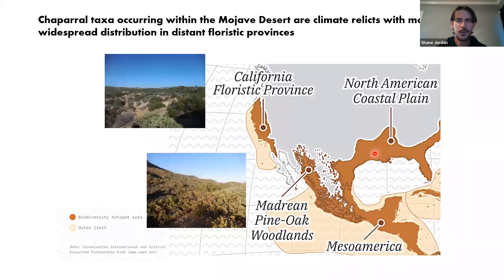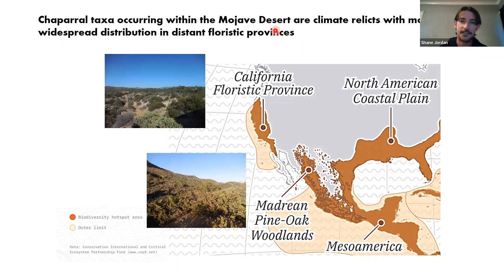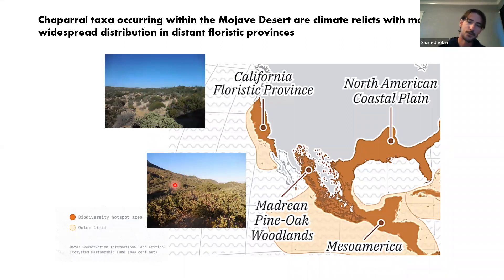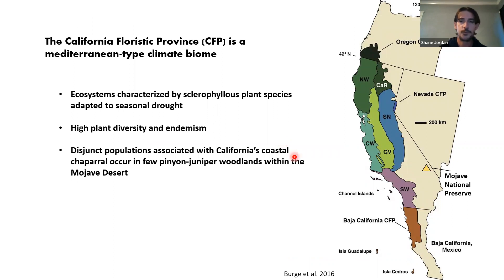The chaparral taxa found in the Mojave Desert today are climate relics with much more widespread distributions in distant floristic provinces — specifically the California Floristic Province and the Madrean Floristic Province, also known as the Madrean pine-oak woodlands. Species from these plant communities do occur here in the Mojave Desert beyond those regions, so I'll talk a bit about these two floristic provinces.